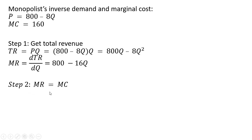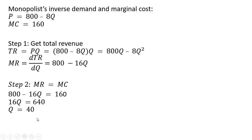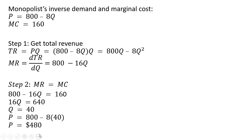The next step, we set marginal revenue equal to marginal cost and solve for q. Subtracting 160 from 800 and dividing through by 16, the monopolist will produce 40 units of output. Plugging q equals 40 into the inverse demand, we see that the profit-maximizing price equals $480.